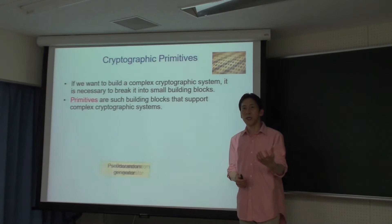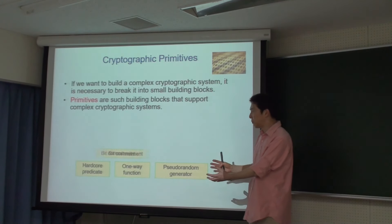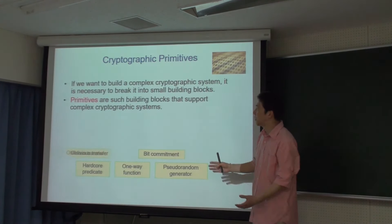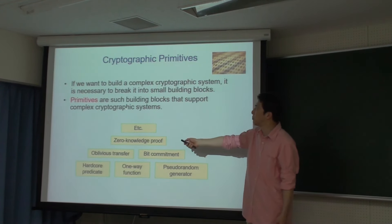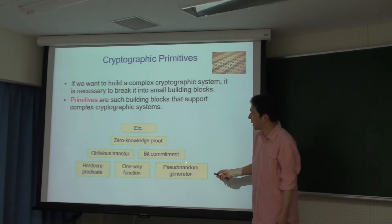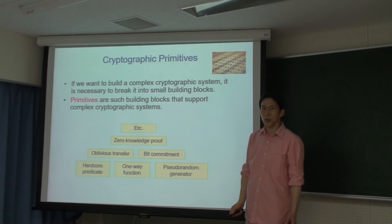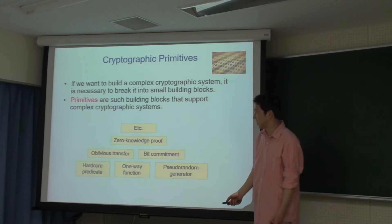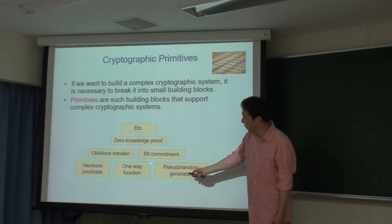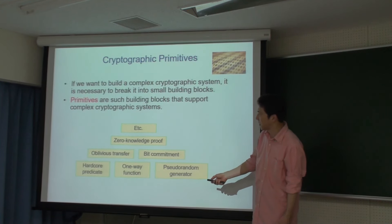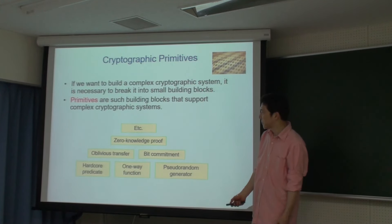ワンウェイファンクションはOWFと略されます。数度ランダムジェネレーターはPRGと略されることが多いです。暗号系の大きな複雑なシステムというのは、プリミティブと呼ばれる小さなブロックを積み上げて大きなシステムを作る形になっています。その中で基本になるのがワンウェイファンクション、数度ランダムジェネレーター、それからハードコアプレディケットと呼ばれるものになります。